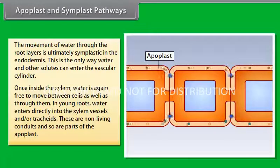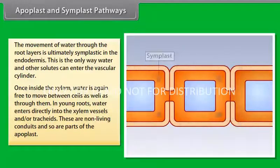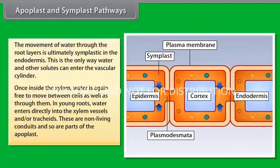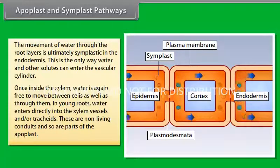Once inside the xylem, water is again free to move between cells as well as through them. In young roots, water enters directly into the xylem vessel and or tracheids. These are non-living conduits and so are parts of the apoplast.